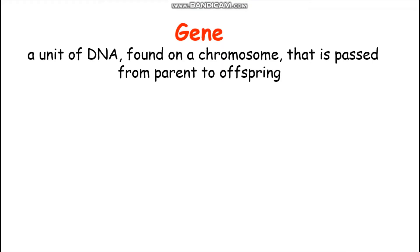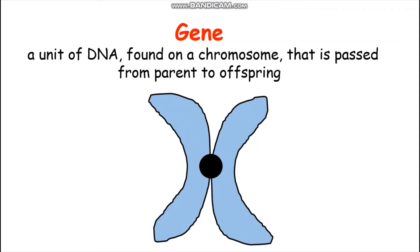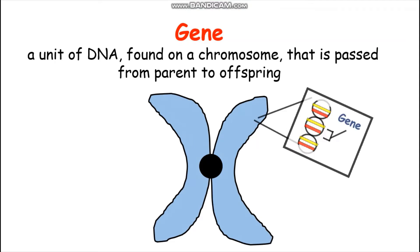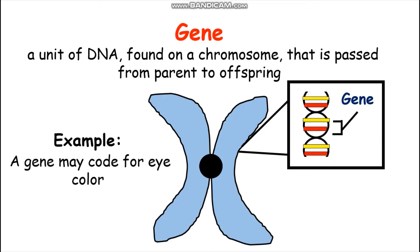Term number one: what is a gene? A gene is a unit of DNA found on a chromosome that is passed from parent to offspring. So say this is a chromosome — on the strand of DNA that makes up the chromosome, one part of it is called a gene. Genes control what traits an organism has. For example, a gene may code for eye color.